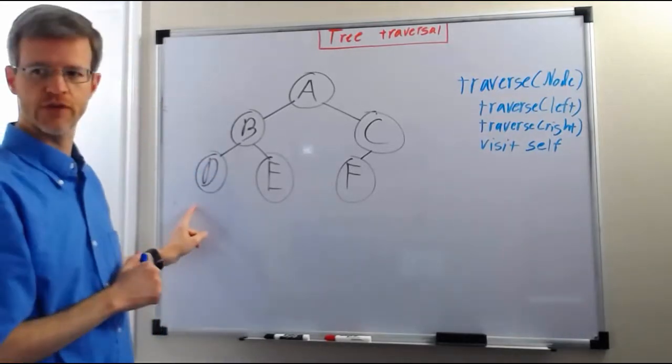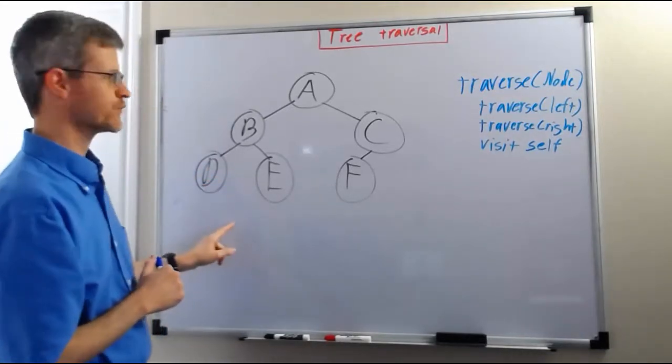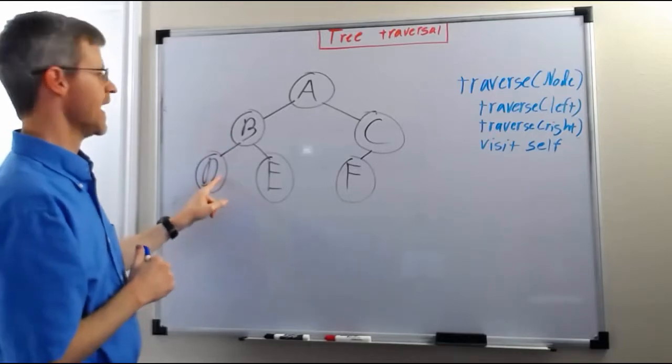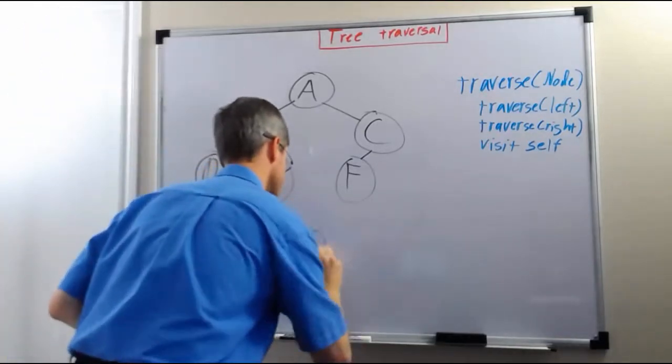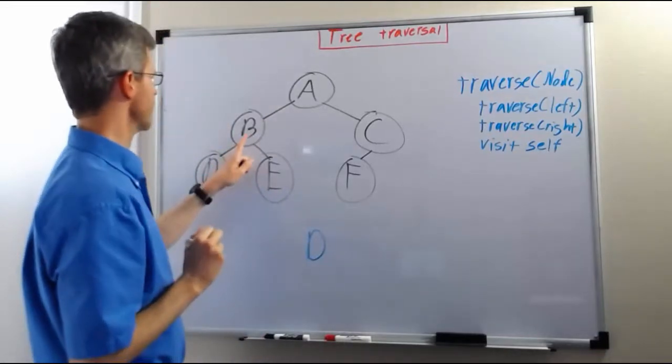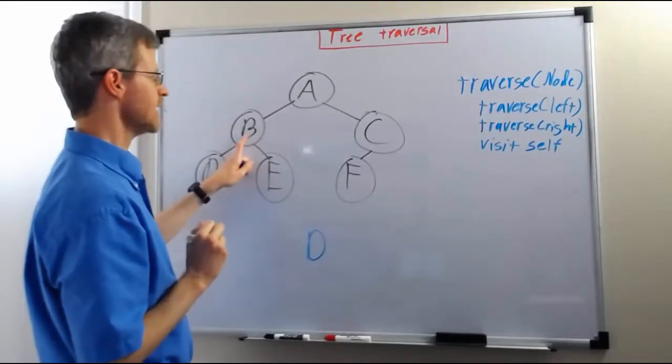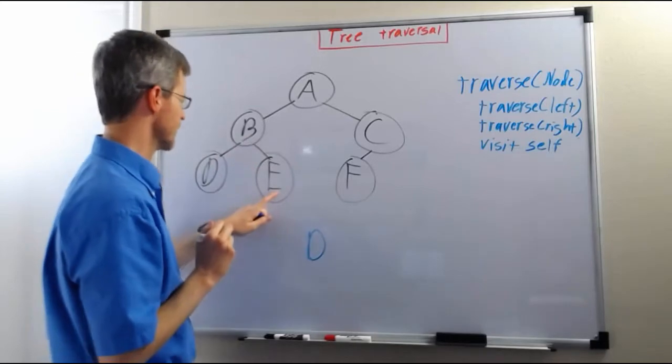At D we try to traverse left and there is nowhere to go. We try to traverse right and there is nowhere to go, and then we visit self, and so we visit D. After that we go back up to B. We've been left from B, but we haven't been right, so we go right.